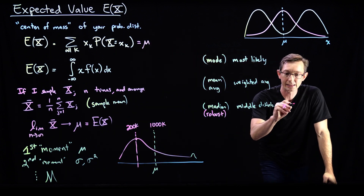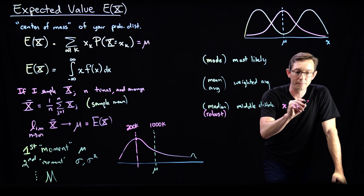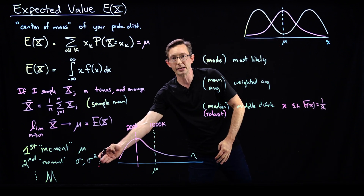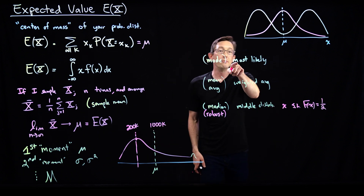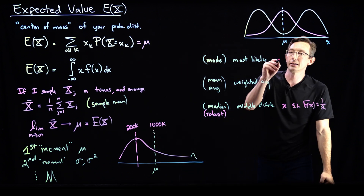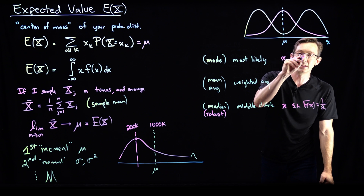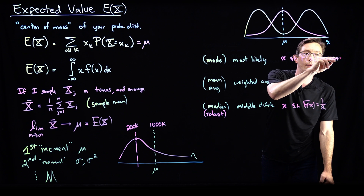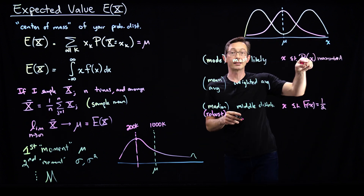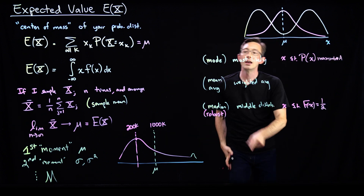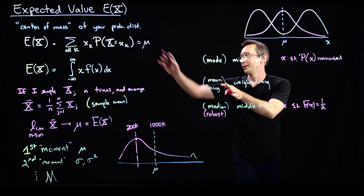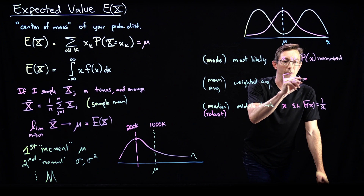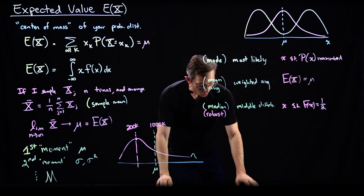The median is x such that the cumulative density function equals one half — literally half the probability is left and half is to the right. The mode is the most likely: x such that my probability density of x is maximized, which you could write as the argmax of P(x) or F(x). The mean or average is this expected value of x — this expectation of x that we're calling mu.